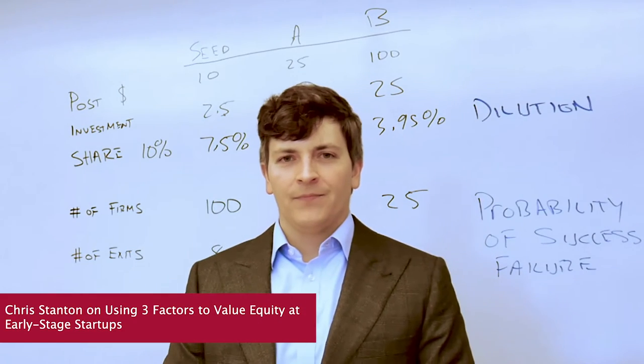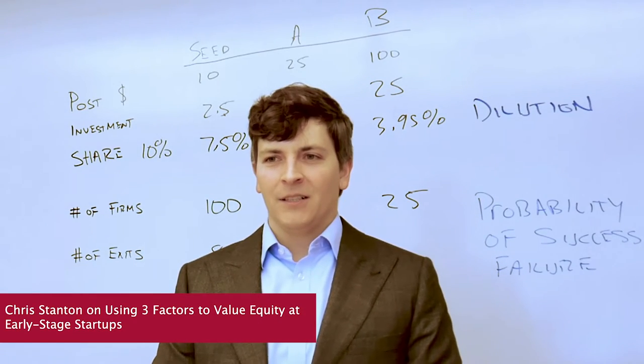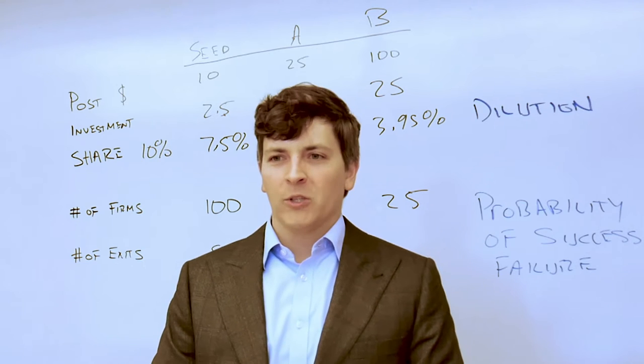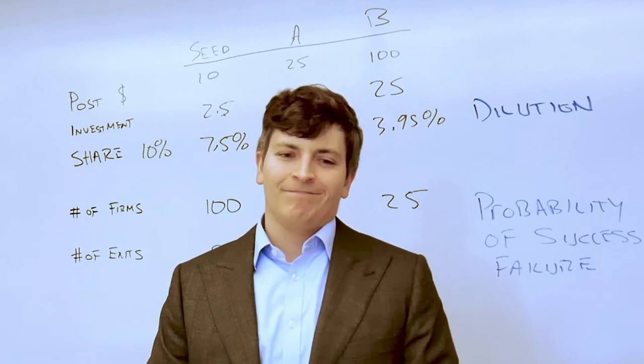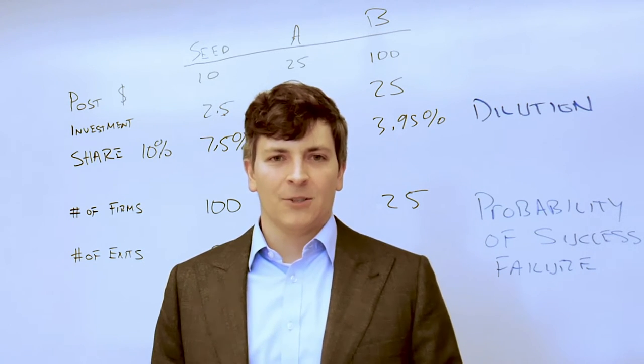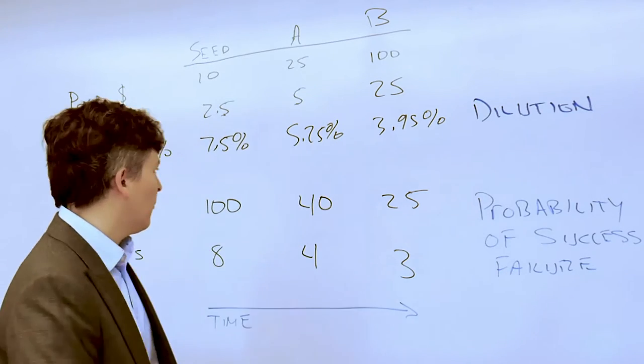So we've started with a dream that the founder promised you 10% of a $100 million company or $10 million. How does that look after we account for all of these factors?